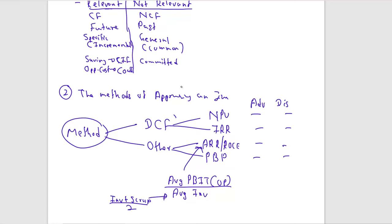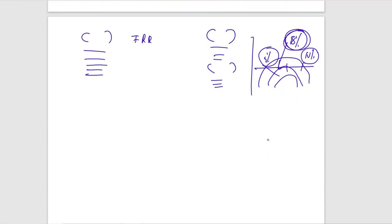Overall, discounted cash flow methods (NPV and IRR) are considered superior to other methods because they account for the time value of money. Between NPV and IRR, NPV is generally preferred because it is an absolute measure, unlike IRR which is relative.